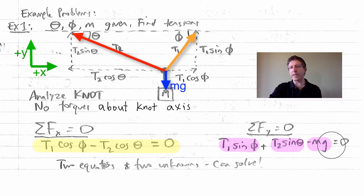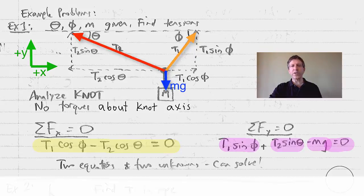Those all add up, again, to zero. You solve those two simultaneous equations. There's only two unknowns, T1 and T2, and you're good to go.